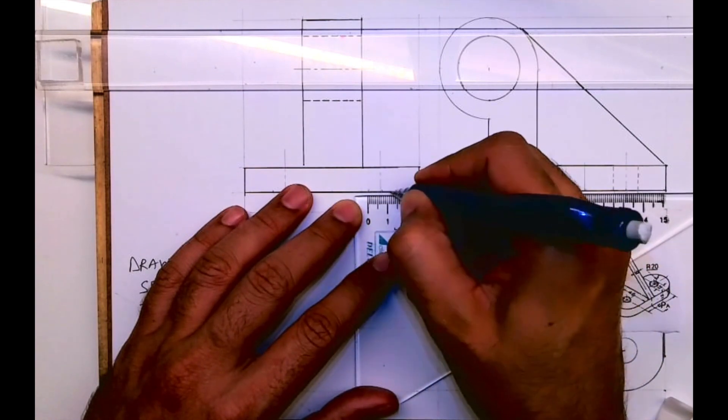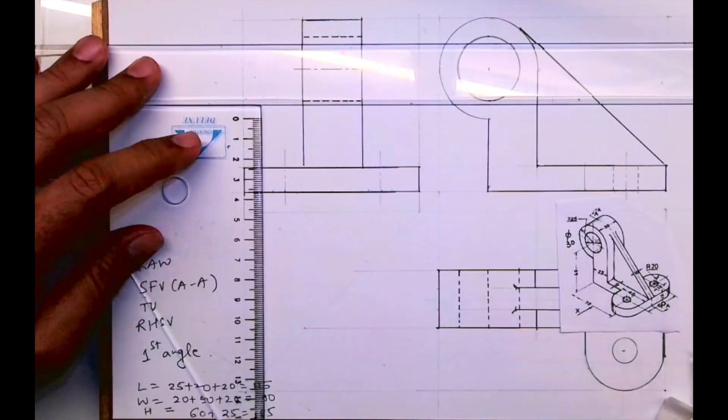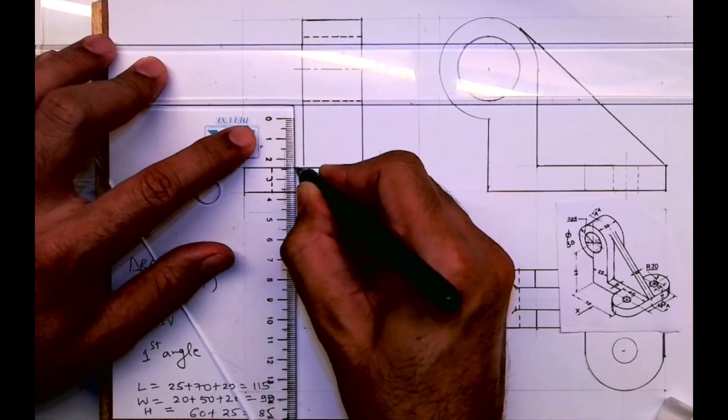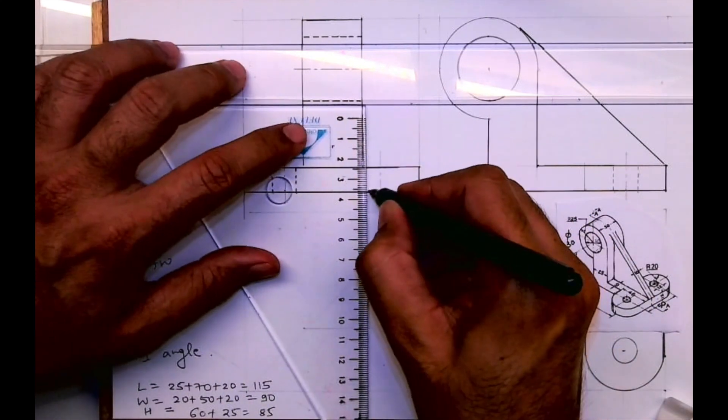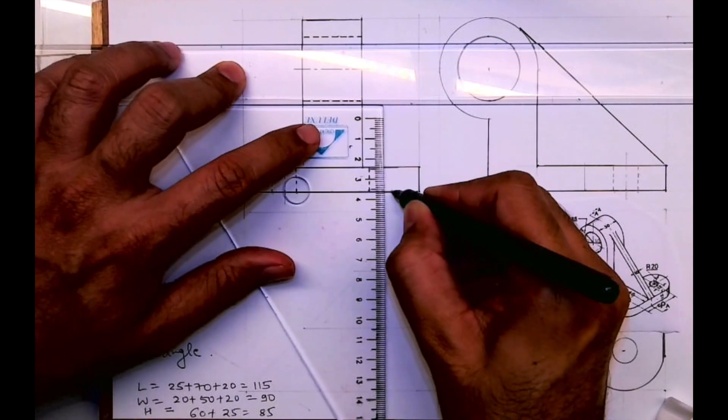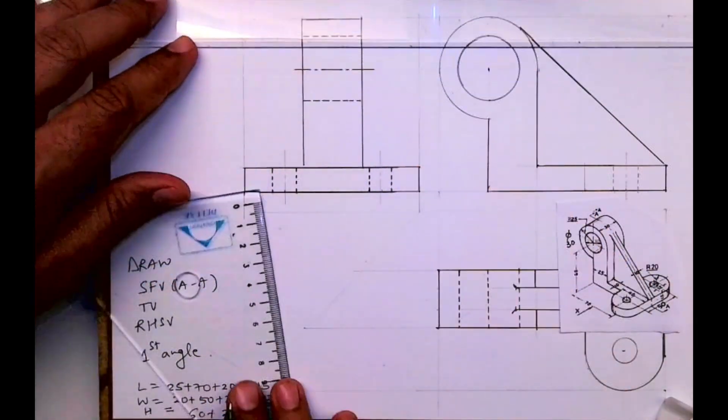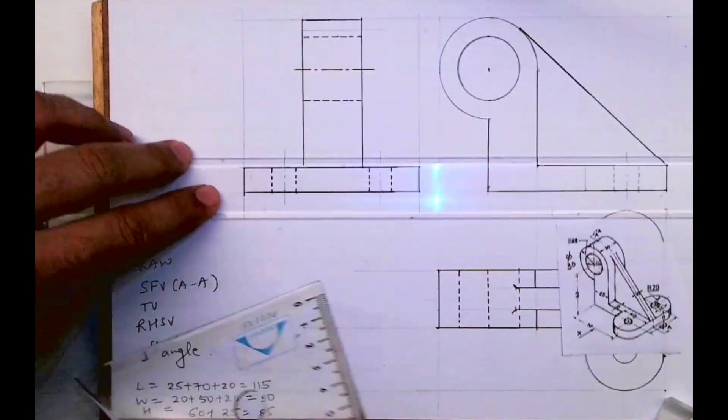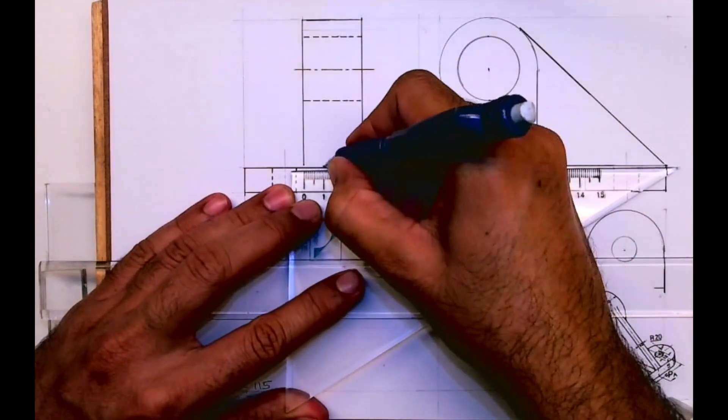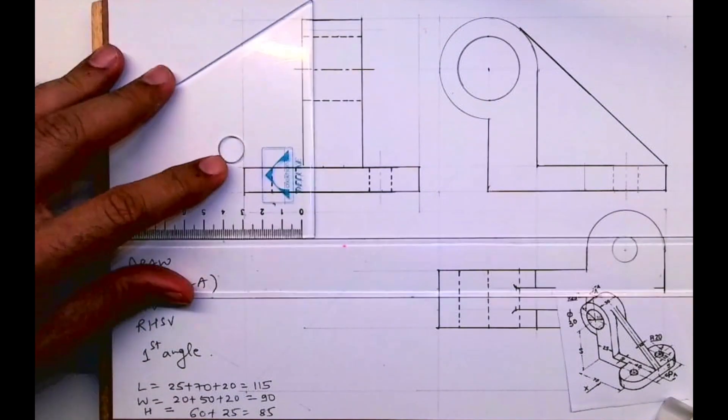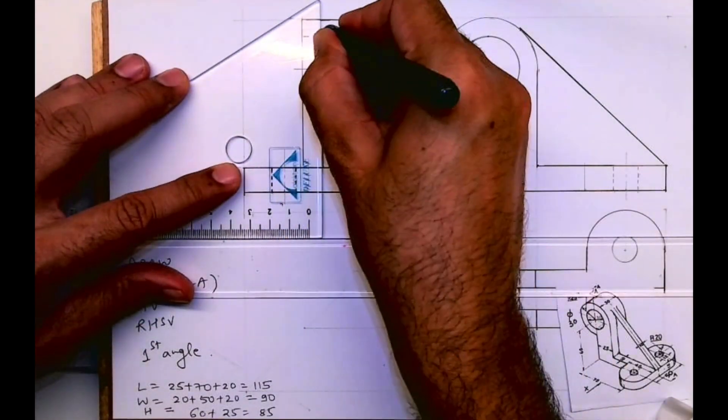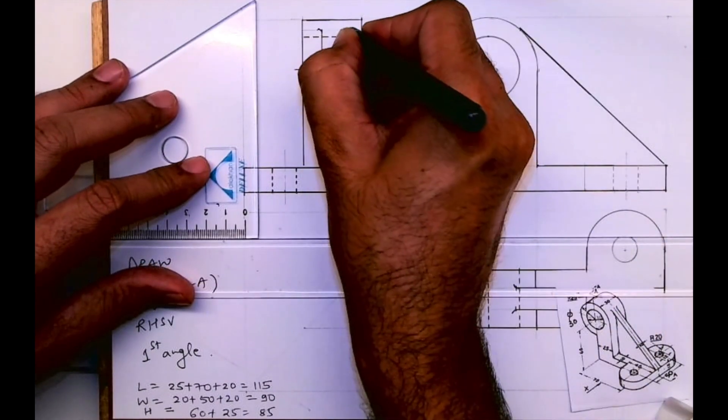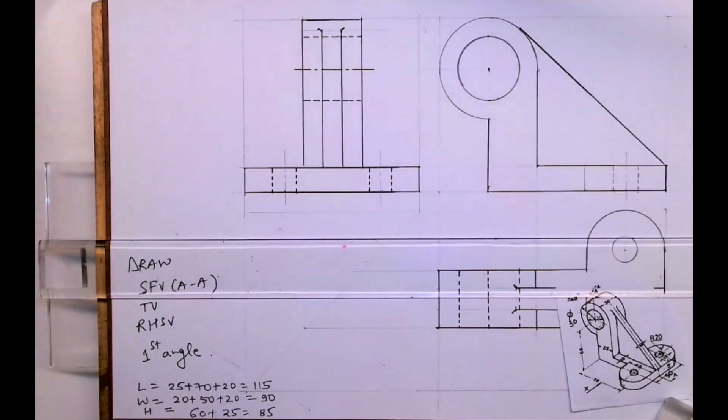After that you project from here. We'll project line. You take midpoint and take 5, 5 on both the sides and you project. So it will be till here and then we'll draw merging curve.